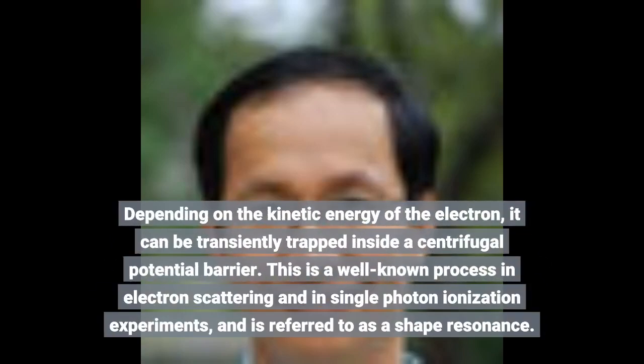Depending on the kinetic energy of the electron, it can be transiently trapped inside a centrifugal potential barrier. This is a well-known process in electron scattering and in single-photon ionization experiments, and is referred to as a shape resonance.